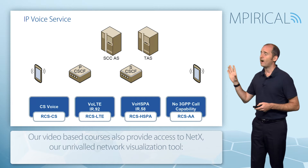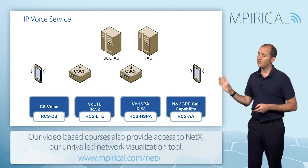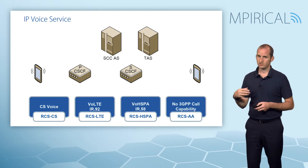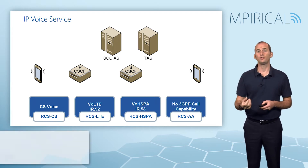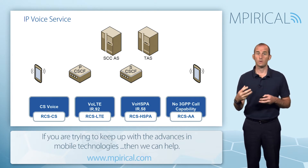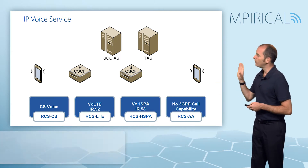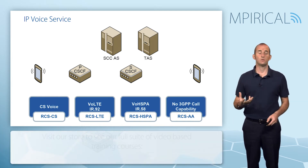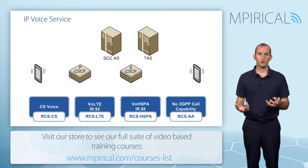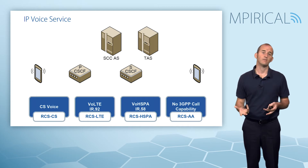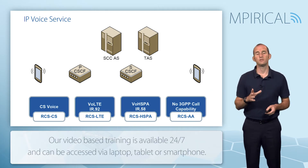We also have a couple of application servers. There's the service centralisation and continuity application server, which deals with services such as single radio voice call continuity and anchors the voice service in the IMS, despite the fact that we might be using circuit switched access. We also have the TAS — the telephony application server — which is there to assist with supplementary services. If we are providing a voice service in RCS, it needs to come with the supplementary services any voice service would be expected to have, and it's the TAS that implements those.